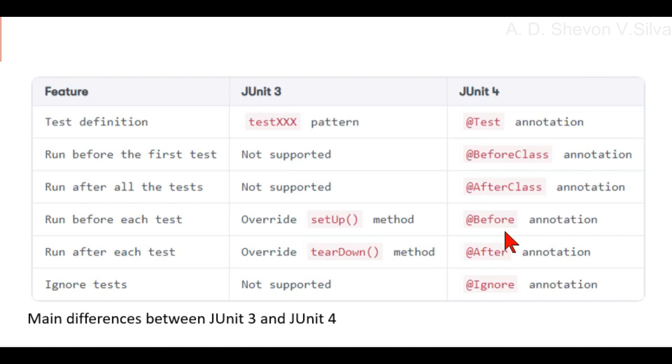Similarly, any public method annotated with @After gets executed after each test method execution. JUnit 4 provides two more annotations to enhance the test lifecycle: @BeforeClass and @AfterClass. They are executed only once per test class, before and after all tests respectively.